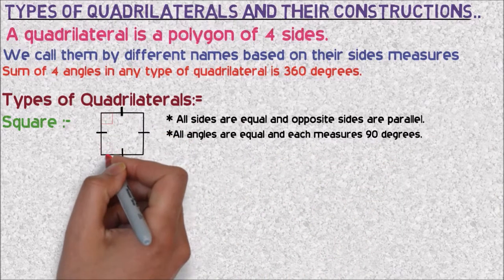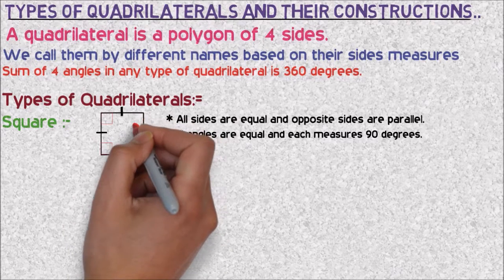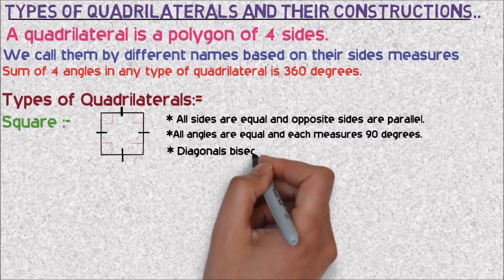The special property of the diagonals is they are equal and also they bisect at right angles.